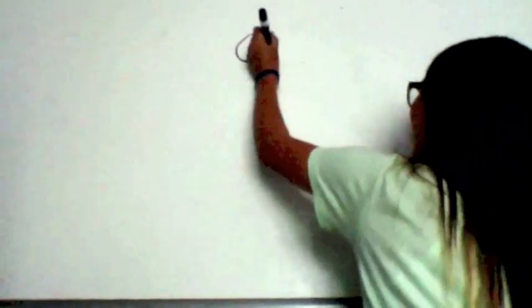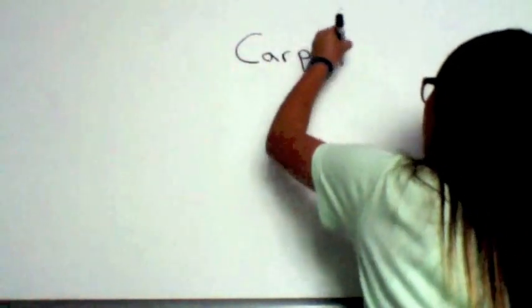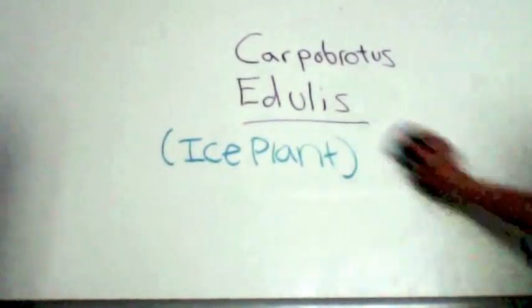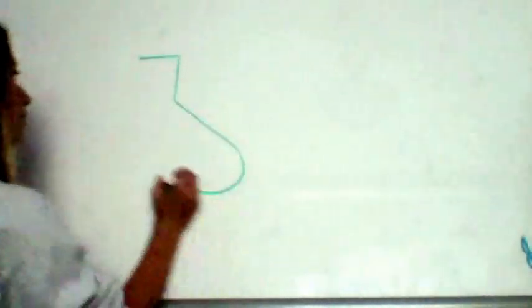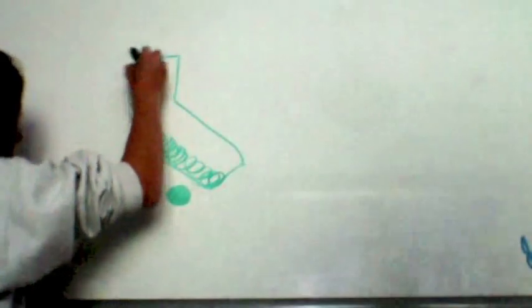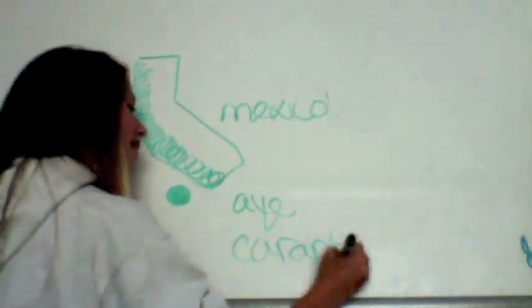So its scientific name is Carpobrotus edulis, which means ice plant. And it's found in North San Francisco—that's my failed drawing—California, the Channel Islands, and Mexico, basically just all those little islands everywhere and the coast.